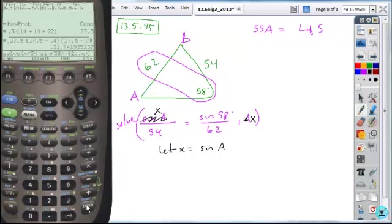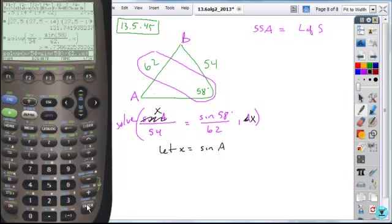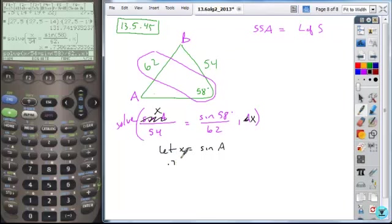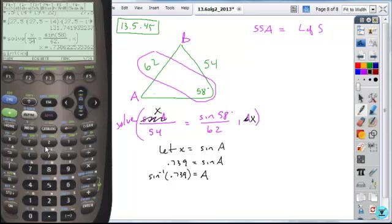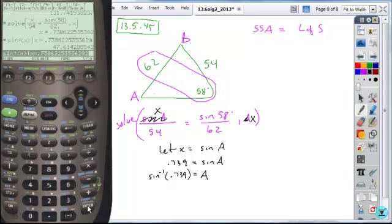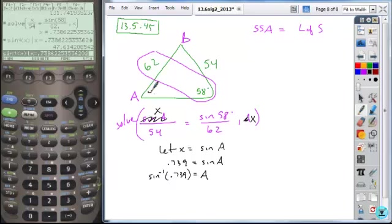So when I use my calculator here, the F2 algebra tab, I get X divided by 54 set that equal to sine of 58 divided by 62. I'm going to put a decimal there so my answer is given in decimal form. And when I hit enter, identify X as the variable I'm solving for. I expect my ratio to be some number between negative 1 and 1. And it is. In this particular case, it winds up being 47.61.